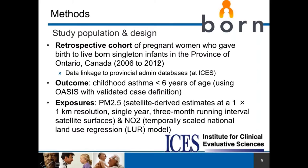We used the database available from 2006 onward at ICES, and then it was linked to a database of incident childhood asthma cases diagnosed before six years of age — the Ontario Asthma Surveillance Information System, which uses a validated case definition. We limited the timeframe of identifying childhood asthma to under six years of age because studies have shown that prenatal or early life exposure might be more related to preschool-year children.